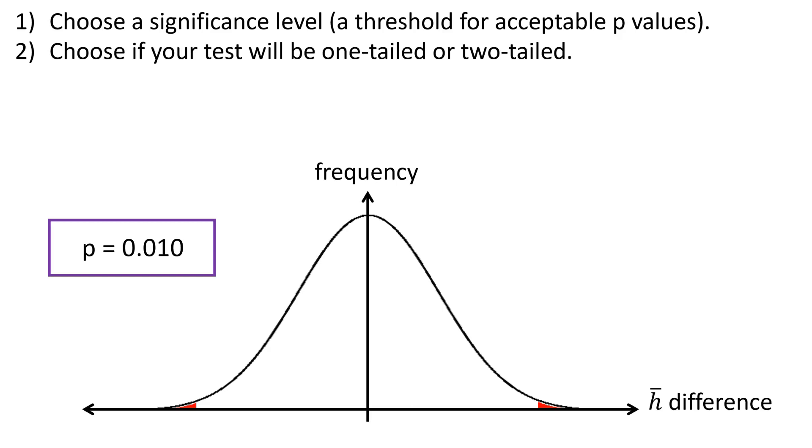Most of the time, we'll be doing two-tailed tests. And most of the time, your best bet with the p-value, or with the significance level, is to choose a maximum p-value of 0.01.